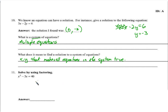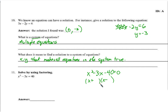Solve by using factoring. We need 0 on one side, so subtract 40 from both sides. Factor on x and x: two things that multiply to negative 40 and add to negative 3. 10 and 4 won't work. Try 5 and negative 8 — that multiplies to negative 40 and adds to negative 3. Using our detective skills: 0 happened, so x plus 5 must have been 0, or x minus 8 must have been 0. The solution is x equals negative 5 or x equals 8.